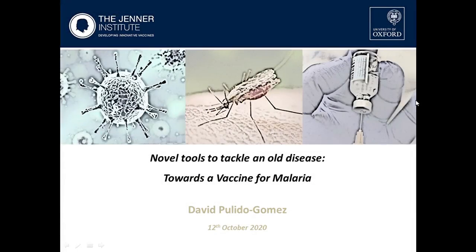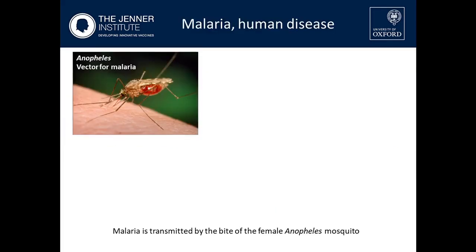I would like to thank the Spanish embassy for giving me the opportunity to give this talk. Today I'm going to give you a brief overview about vaccine development against malaria, and I will briefly talk about our latest results at the Jenner Institute at the University of Oxford. I am David Pulido Gómez.